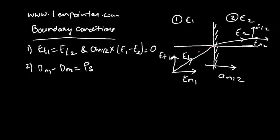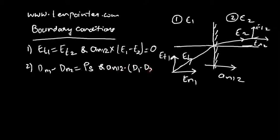Considering electric field vectors E1 and E2 in two regions, we get components Et1, En1, Et2, and En2. For electric flux density vectors D1 and D2, we get Dt1, En1, Dt2, and En2. The normal components of electric flux density are not continuous across the interface — unlike the tangential component of E — but are discontinuous by magnitude ρs. So Dn1 minus Dn2 equals ρs, or in vector form: An12 dot (D1 minus D2) equals ρs.